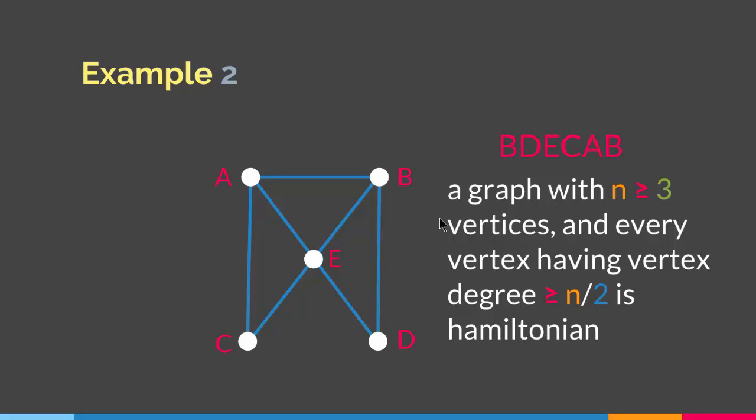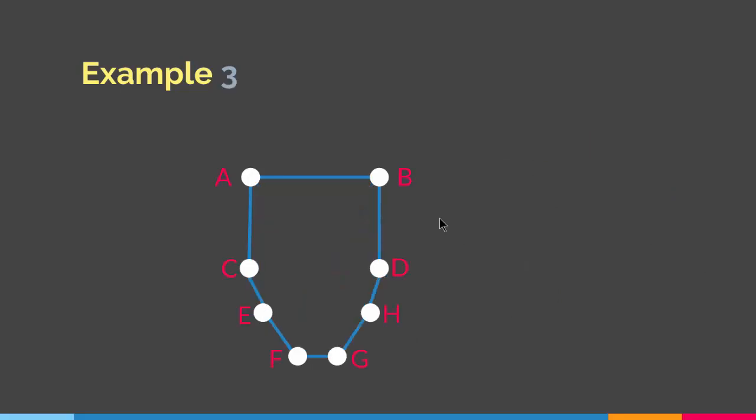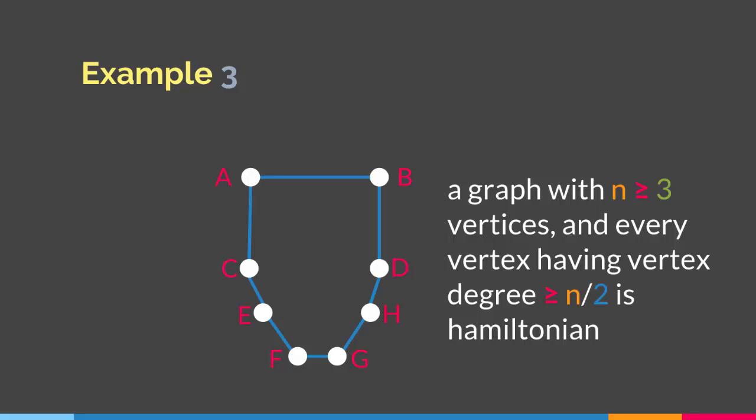As I mentioned at the beginning, when conditions like Ore's theorem or Dirac's theorem are present in a graph, it is sufficient for the graph to be Hamiltonian. However, if the condition is not present, it does not mean the graph is not Hamiltonian. For our third example, we have a cycle graph with 8 vertices, and the degree of each vertex is 2. Even though the degree is less than half of the number of vertices, the graph is still Hamiltonian — we can start at B, go around, and end at B, hitting every vertex exactly once.